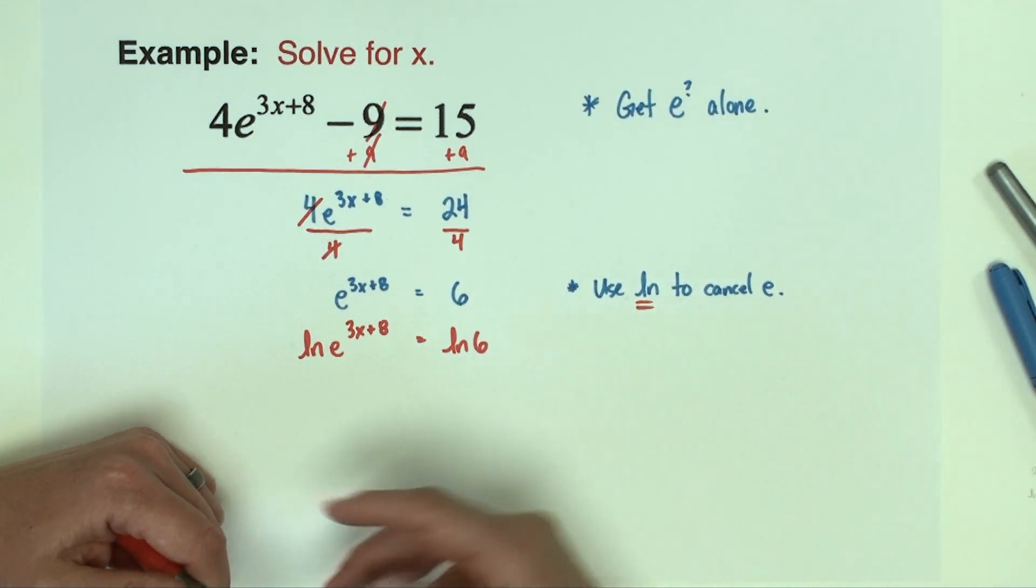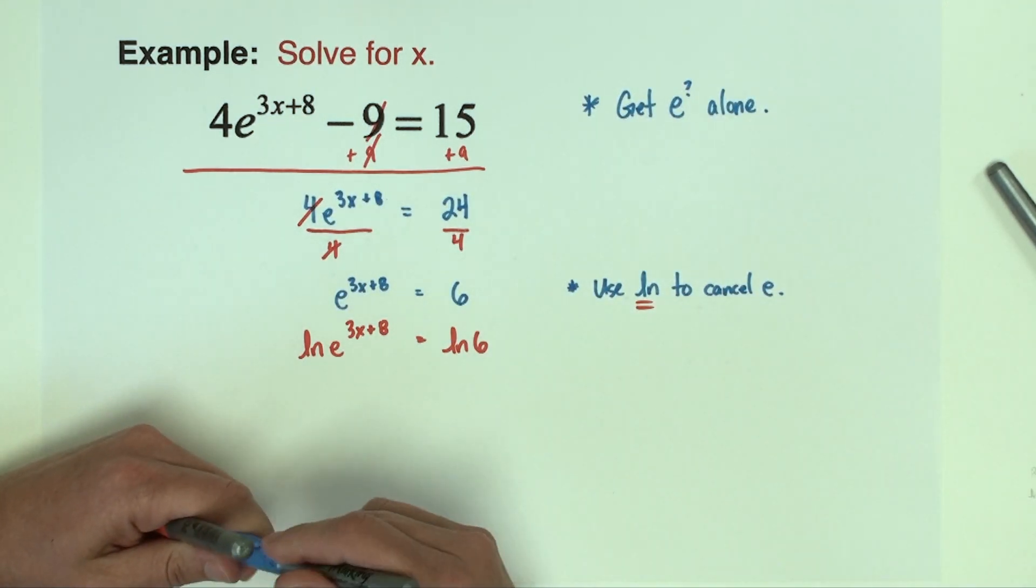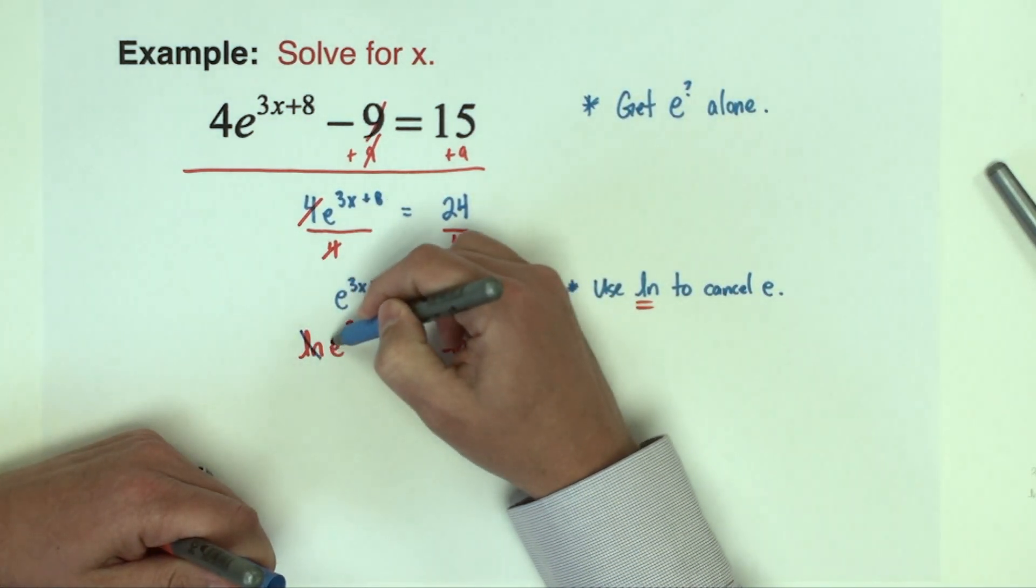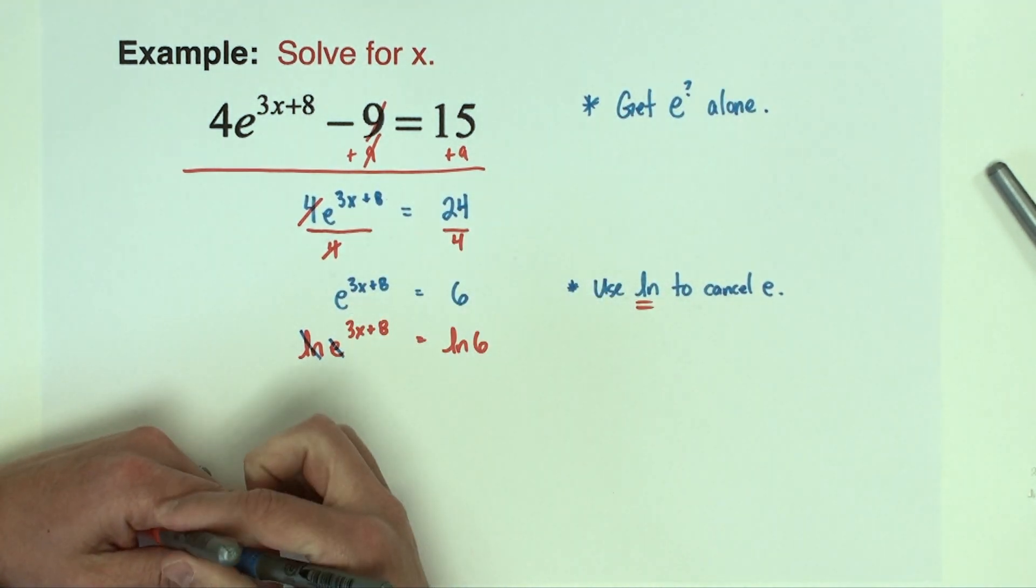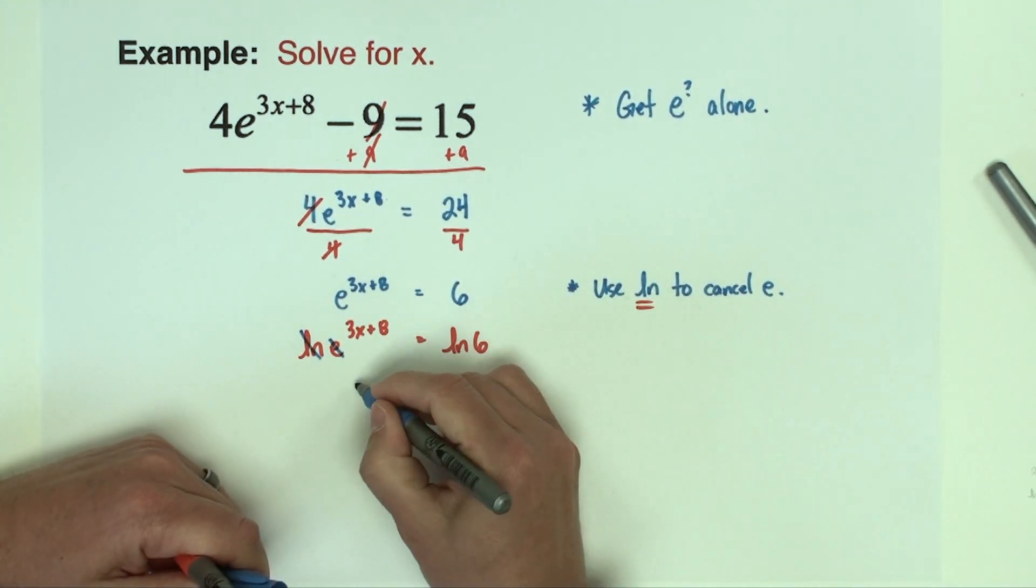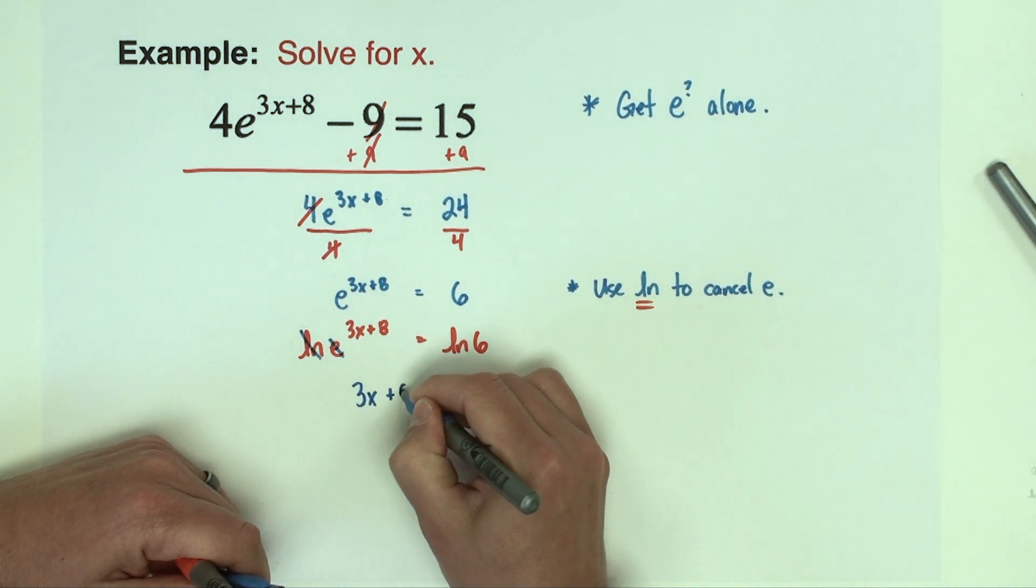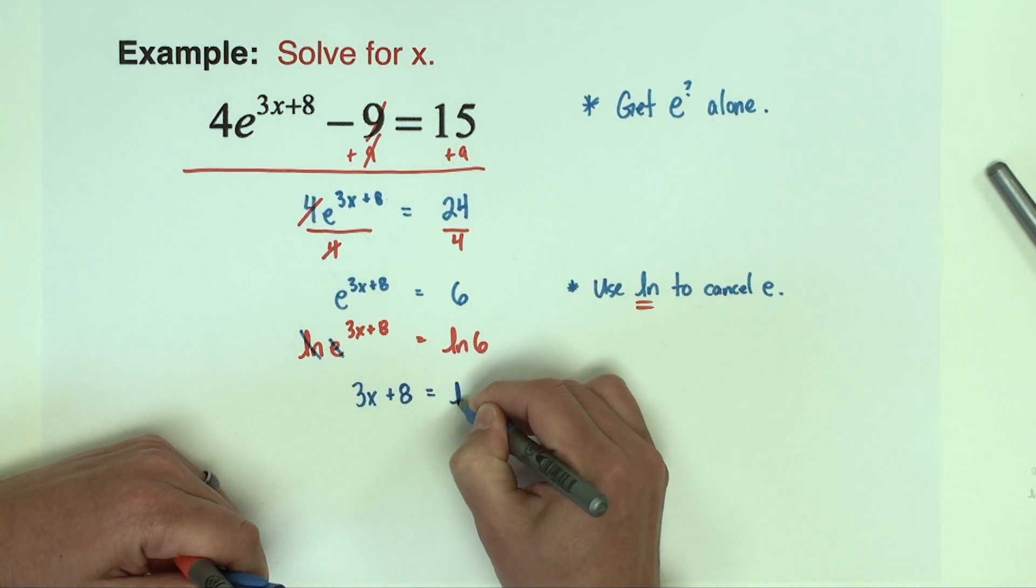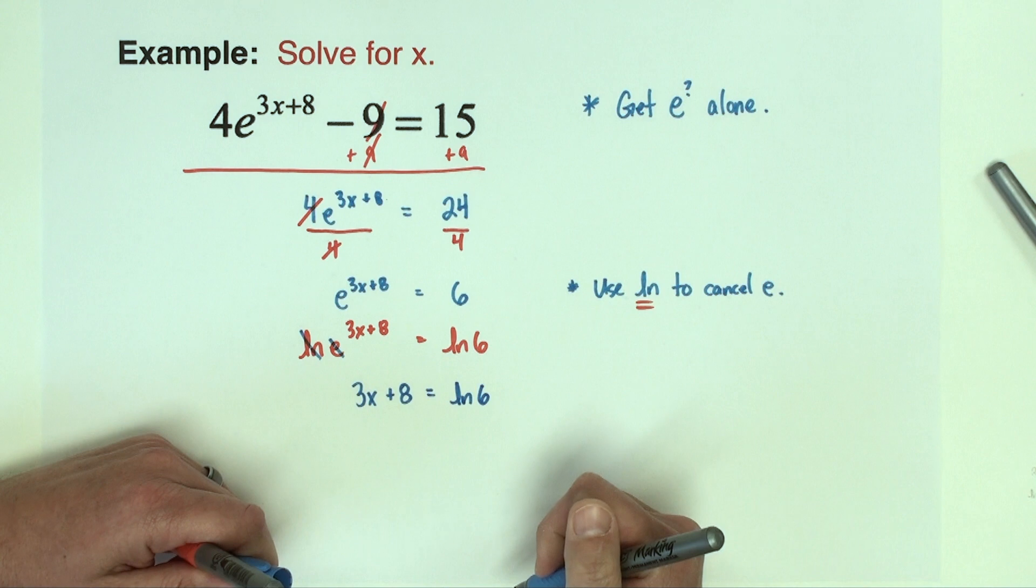These inverse functions, the composition of these functions, are going to cancel each other out. So the natural log and the e get removed and what we have left is just 3x + 8 equals natural log six.